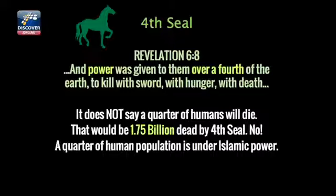Let's continue with the fourth seal. Revelation 6, verse 8 continues and says, and power was given to them over a fourth of the earth to kill with sword, with hunger, with death. Please read it carefully. It does not say that a quarter of humans will die. A lot of prophecy teachers just make a leap in interpretation. You read it, and power was given to them over a fourth of the earth. Suddenly everybody thinks that means a fourth of the earth will die. Does it say that?